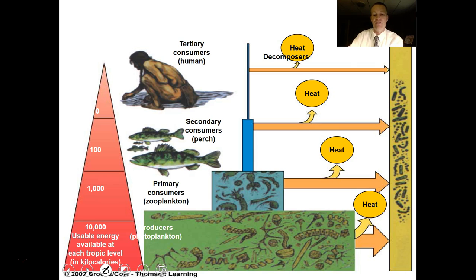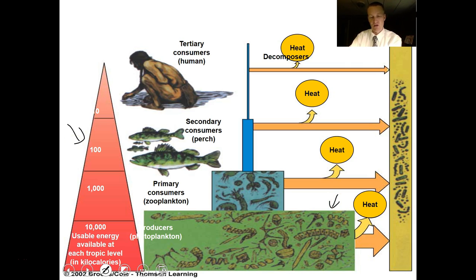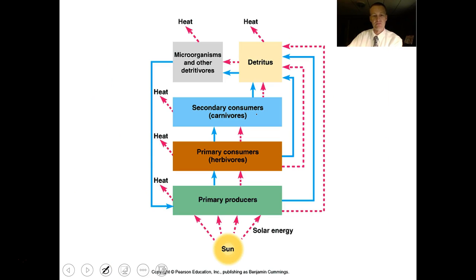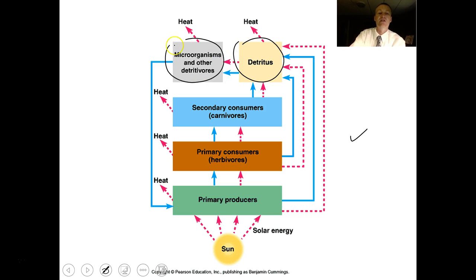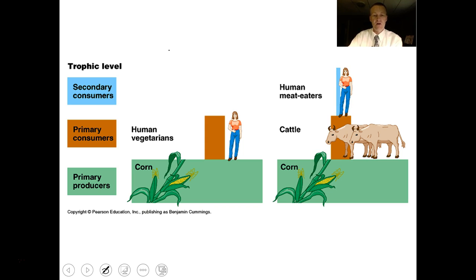I prefer the stacked pyramid because it shows a more proper relationship, with 90% of energy lost between feeding levels. A food web that includes decaying organisms, microorganisms, detritivores, and fungi shows a better, truer picture of energy relationships in an ecosystem.